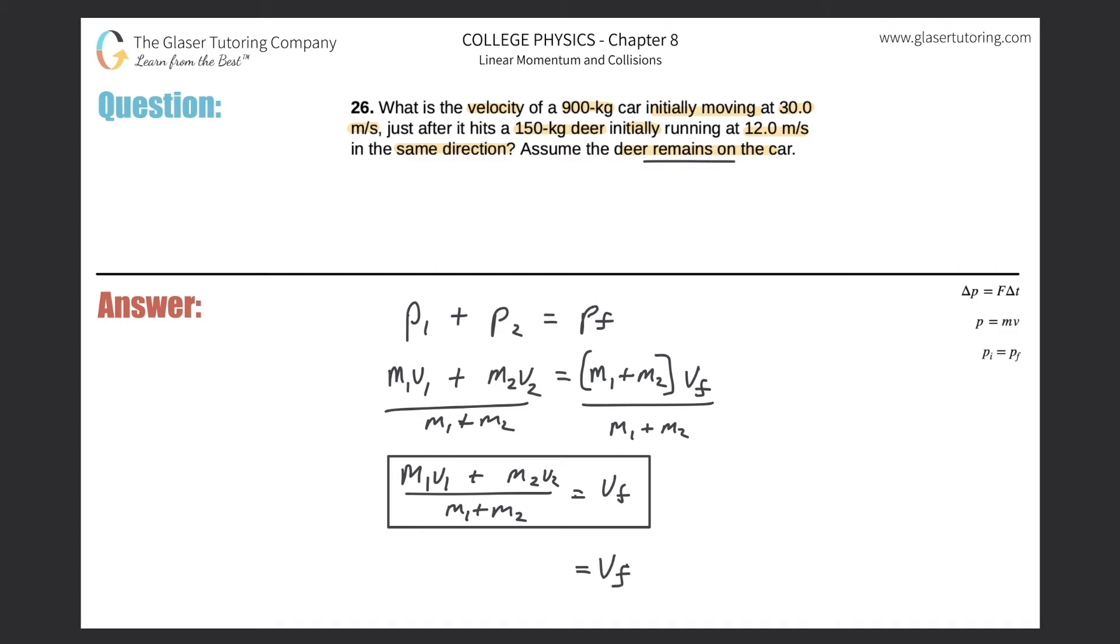So the mass of the car was 900 kilograms. Its velocity was 30 meters per second. The mass of the deer was 150 kilograms. And it said that the deer was running in the same direction as the car. Therefore, if I made the 30 meters per second positive, then the deer's velocity has to also be positive. And then divide that out by 900 plus 150.